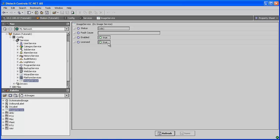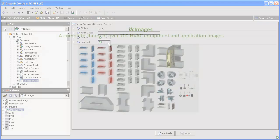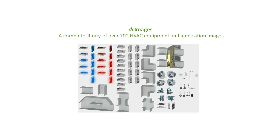Now that we've installed the DC Images files on the ECBOSS, we will move on to how to use the DC Images palette. The DC Images module provides the equipment and components needed to consistently and easily assemble high-end HVAC system graphics. You can create systems such as variable air handling units, fan coil units, and much more using the complete library of over 700 HVAC equipment and application images provided with the DC Images palette.